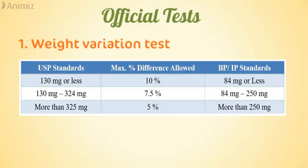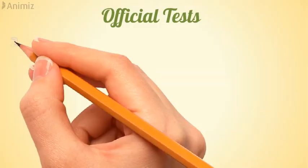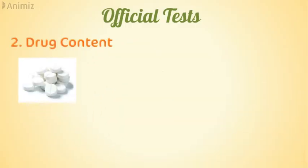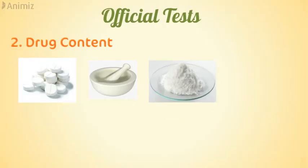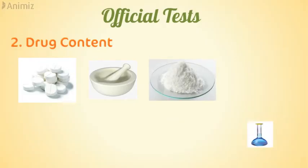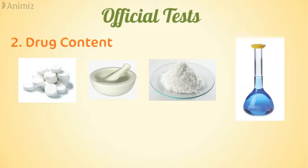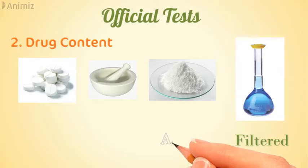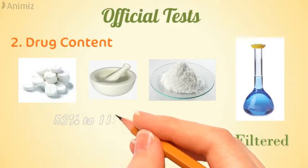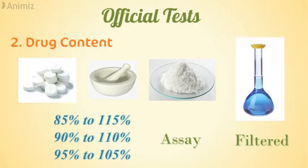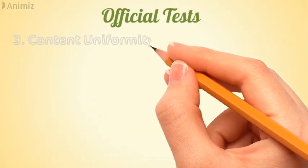The second official test is the drug content test. Twenty tablets are randomly taken, crushed in a mortar, and an amount equivalent to the theoretical content of each tablet is dissolved in a solvent given in the monograph. The solution is filtered and assayed using HPLC or UV. Drug content should be within ±15%, ±10%, or ±5%, as specified in individual drug monographs.